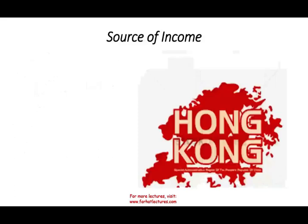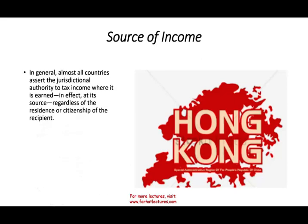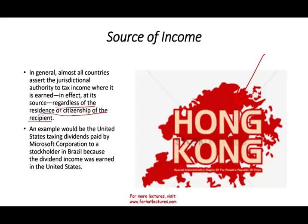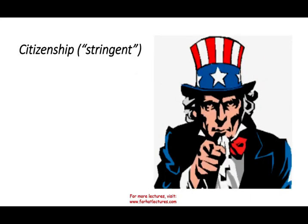Starting with the source of income basis: almost all countries assert jurisdictional authority to tax income where it's earned, regardless of the residence or citizenship of the recipient. Hong Kong is known for using the source basis. An example would be the United States taxing a dividend paid by Microsoft to a stockholder in Brazil — because the dividend income was earned in the US. Even though the recipient is in Brazil, they have to pay income tax in the US on that dividend.